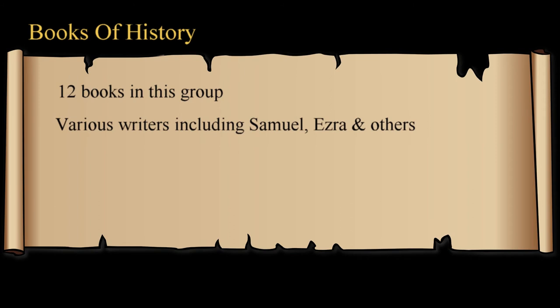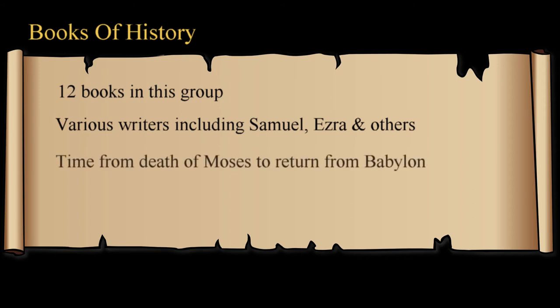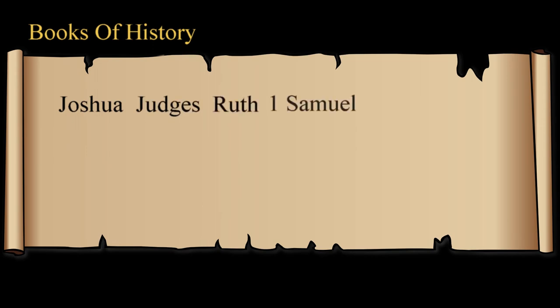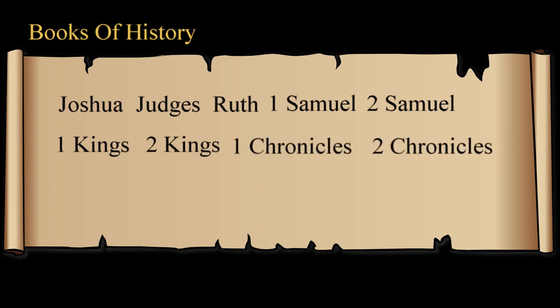The books of history: there are 12 of these books written by various writers, including Samuel, Ezra, and Nehemiah. These books cover the time period from the death of Moses to the return from the Babylonian exile. There is some degree of overlap in the time periods of these books, which we'll clarify in a later video. These books are Joshua, Judges, Ruth, 1 Samuel, 2 Samuel, 1 Kings, 2 Kings, 1 Chronicles, 2 Chronicles, Ezra, Nehemiah, and Esther.